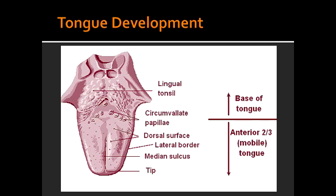Which nerve innervates the extreme posterior part of the tongue? The extreme posterior part is innervated by cranial nerve 10, which is the vagus nerve. Which cranial nerve is responsible for motor innervation of the tongue? Motor innervation of the tongue is by cranial nerve 12, which is the hypoglossal nerve.